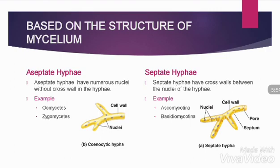You can see the nuclei and cell walls in the septate hyphae, which make them different from aseptate hyphae. Septate hyphae have cross walls between the nuclei; examples include Ascomycotina and Basidiomycotina.